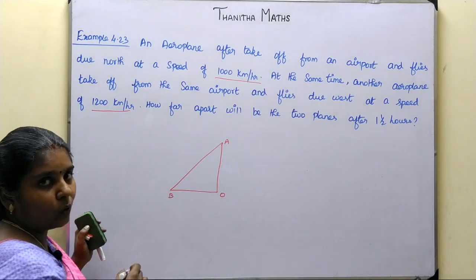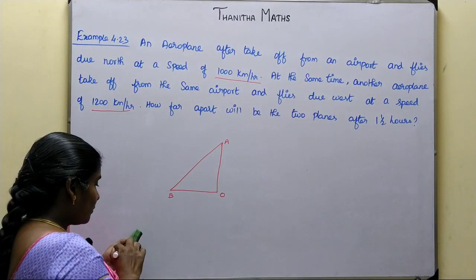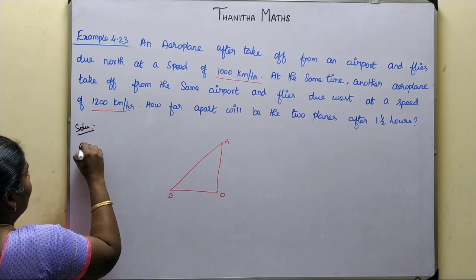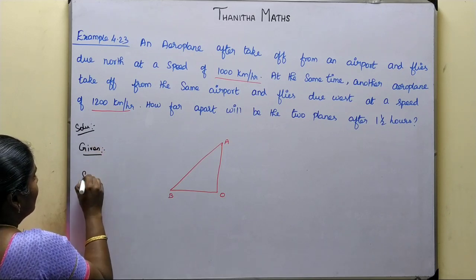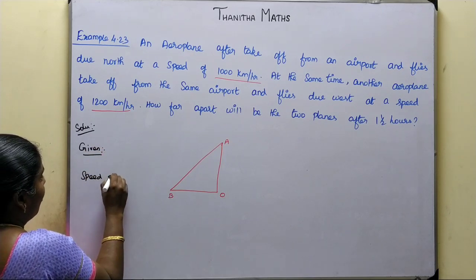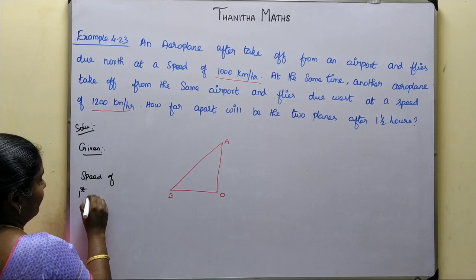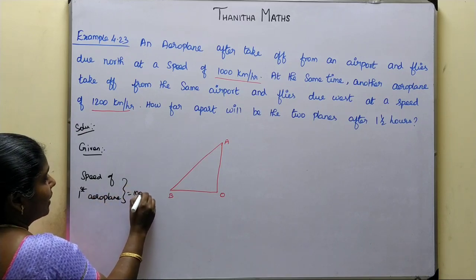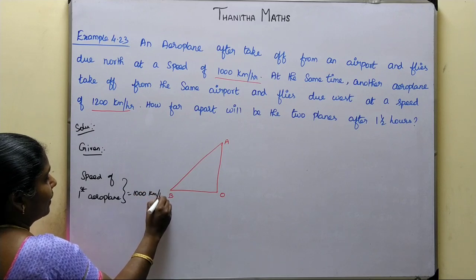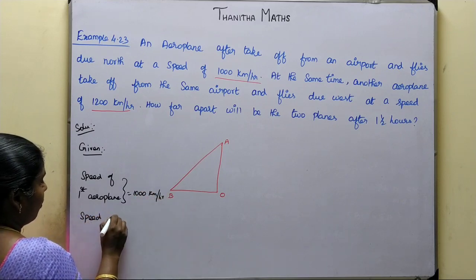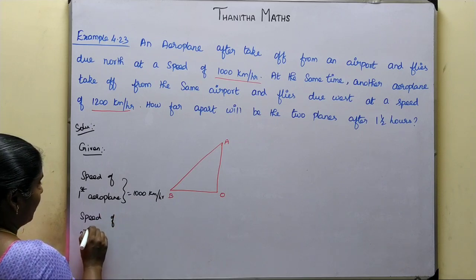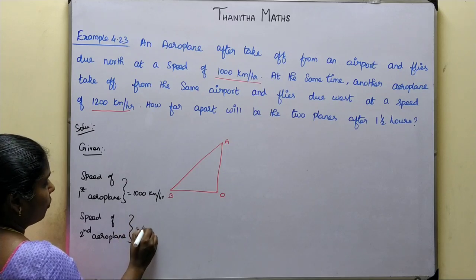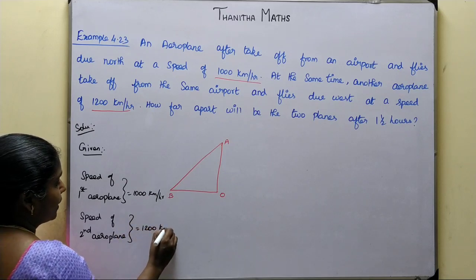We have to find distance AB. Now, the given data: speed of first airplane is 1000 km per hour. Speed of second airplane is 1200 km per hour.